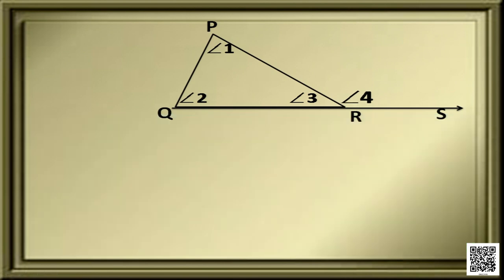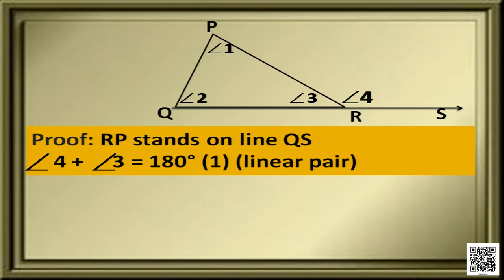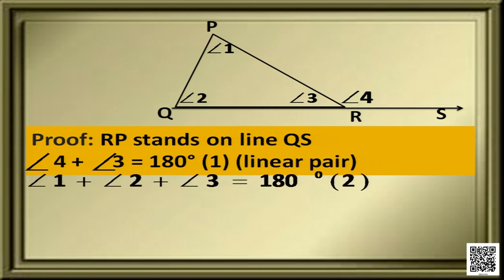How to prove it? You see, RP is a line ray that stands on the line QS. So angle 3 and angle 4 are a linear pair. So we can say that angle 4 plus angle 3 is equal to 180 degrees. Now, we know that by the angle sum property of triangle PQR, the sum of interior angles is 180 degrees. That means angle 1 plus angle 2 plus angle 3 is equal to 180 degrees.